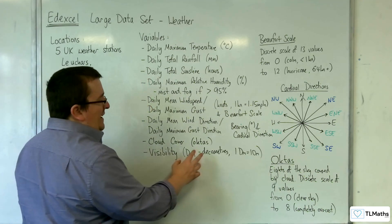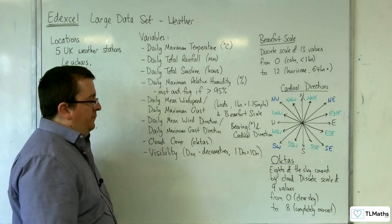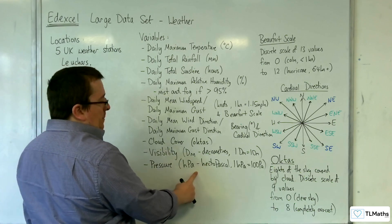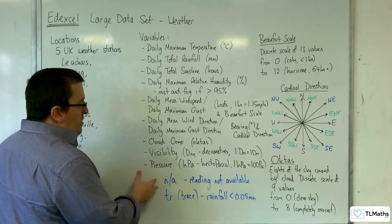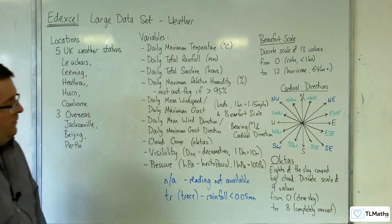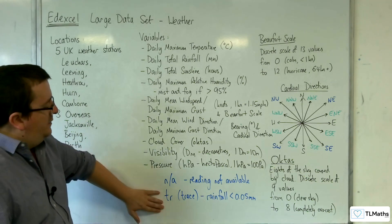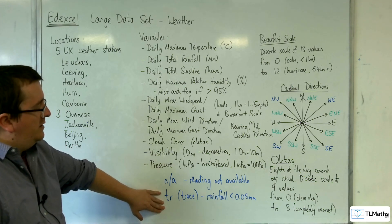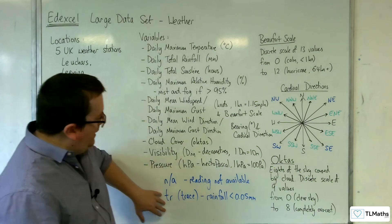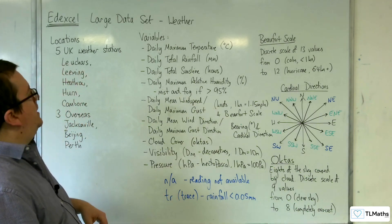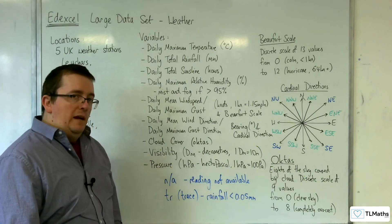Visibility is measured in decameters, where one decameter is equivalent to 10 metres. Pressure is measured in hectopascals, where one hectopascal equals 100 pascals. You may also find some data is missing — sometimes you'll see 'NA', which means the reading is not available. You'll also see 'Tr', which represents a trace amount under rainfall. When you see Tr for daily total rainfall, that means it's under 0.05 millimetres.